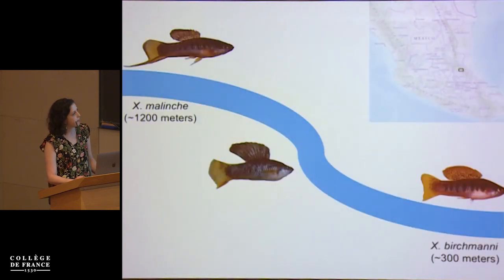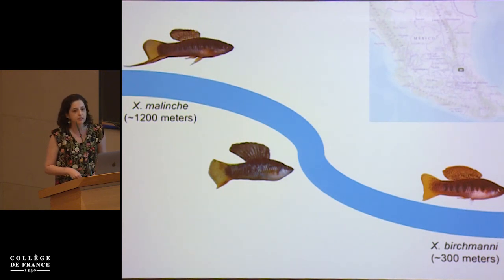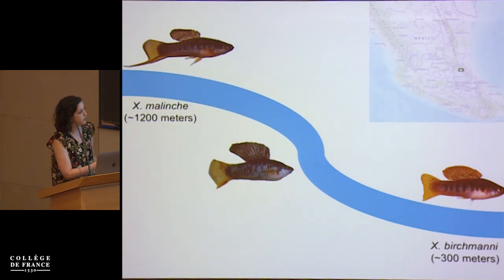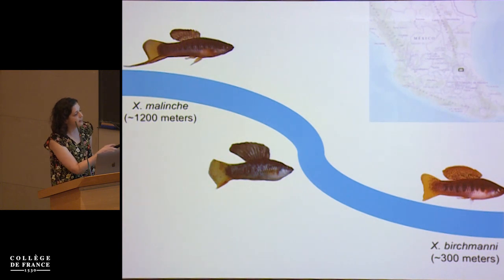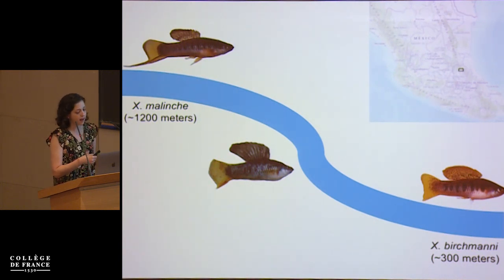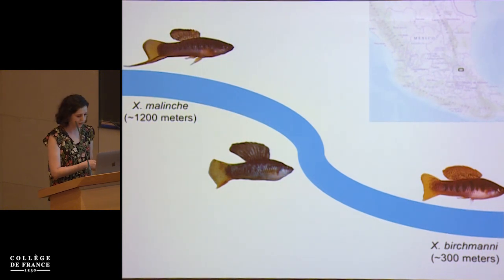The work that I'm going to tell you about today focuses on two closely related species of swordtail fish, Xiphophorus malinche and Xiphophorus birchmanii. These species are about a half a percent divergent on the sequence level, which is reflected also in their morphological, behavioral, and ecological divergence. They hybridize at intermediate elevations and in multiple river systems, which gives us a really nice tool to try to understand the predictability of hybridization.